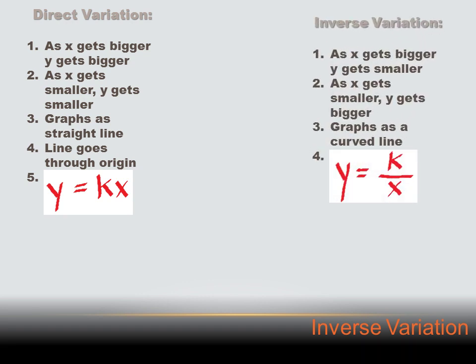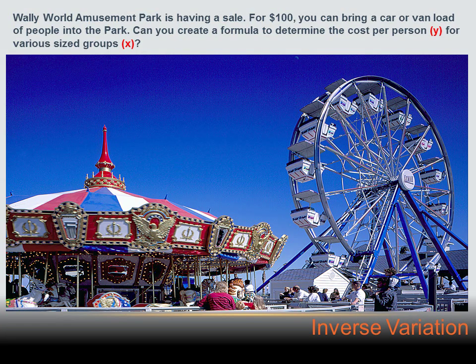Inverse variation is different. One, as x gets bigger, y gets smaller; two, as x gets smaller, y gets bigger — they go in opposite directions. Three, when we graph it, it graphs as a curved line. And four, it must be written in the format y equals k divided by x, where k is a constant.